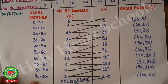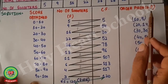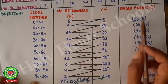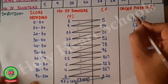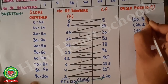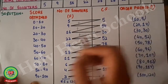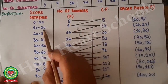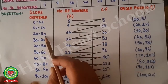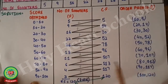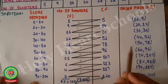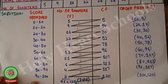Since 120 is even, we will use the formulas related to the even concept. The fourth column will be order pairs, written as upper limit, cumulative frequency: 10,5 — 20,14 — 30,30 — 40,52 and so on. These are the four columns we draw first, then apply the formulas.